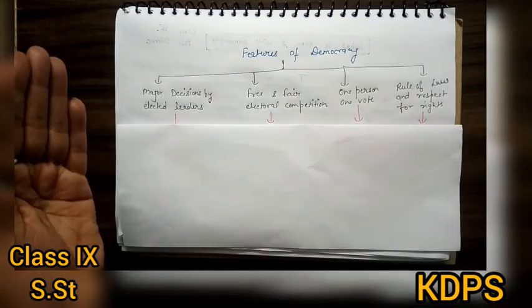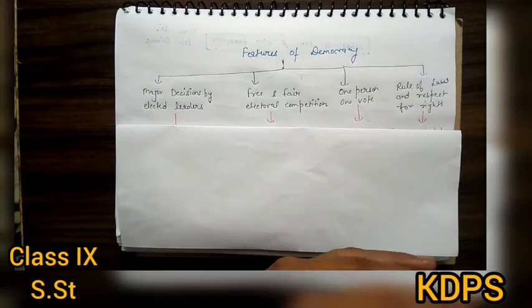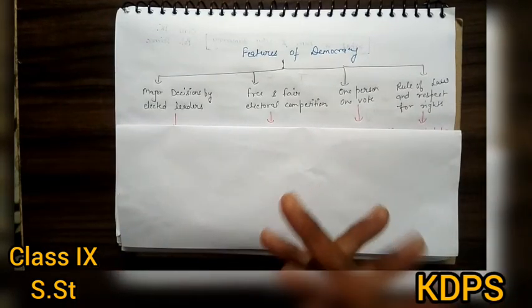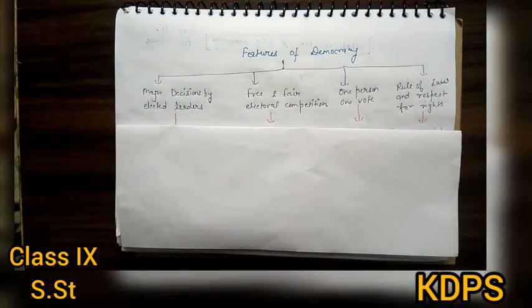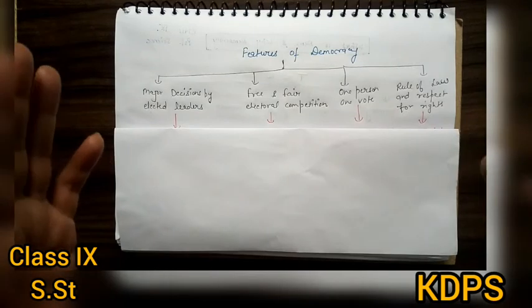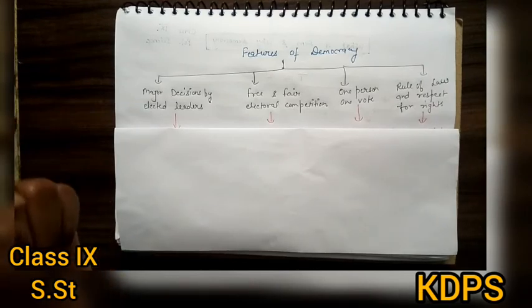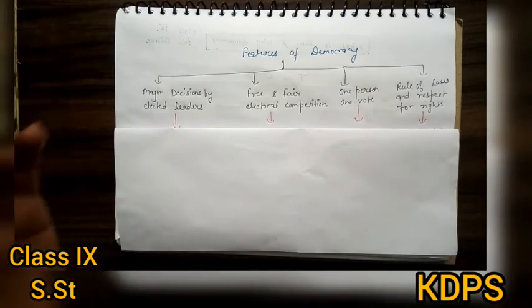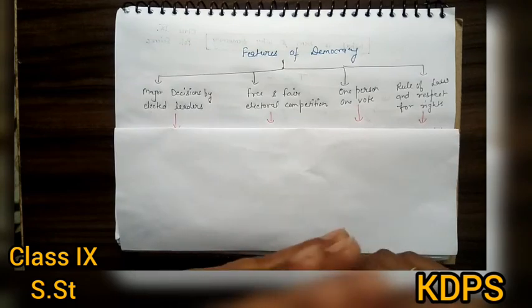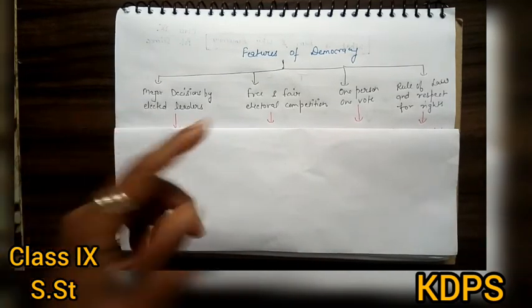We will do this in different case studies. First, I will tell you the features, and after that, I will tell you one case study. Next is your free and fair electoral competition. It means that there should be proper elections. We have to win and vote for those who are our candidates. So it doesn't matter that no one will use malpractice to win the election. If he wins by malpractice, what will he do? He will make bad decisions.